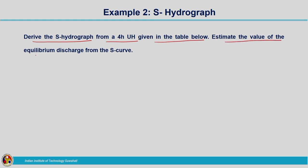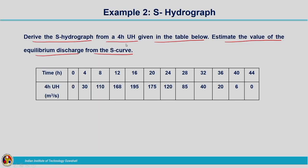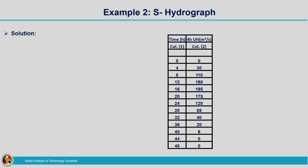Derive the S hydrograph from a 4-hour unit hydrograph given in the table. Also estimate the value of the equilibrium discharge from the S curve. We have to derive the S hydrograph from the 4-hour unit hydrograph. While discussing S hydrograph, we saw that after certain time the S hydrograph attains an equilibrium discharge, and we need to determine that value as well. These are the ordinates of the 4-hour unit hydrograph.